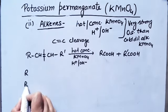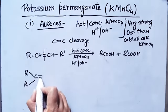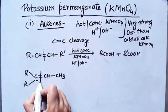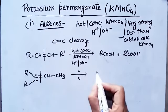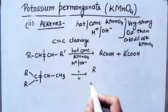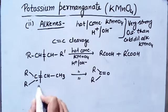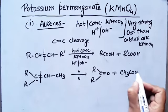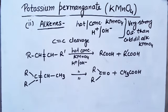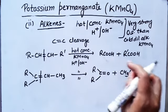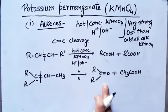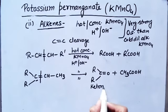In the case where no hydrogen is present on the carbon atom, upon cleavage with hot alkaline concentrated KMnO₄, that group will change to a ketone. So from one side you get a ketone and from the other side you get an acid. With hot concentrated KMnO₄, cleavage of bonds occurs giving either R-COOH or R-COOH — if no hydrogen is present on the carbon, a ketone is formed.